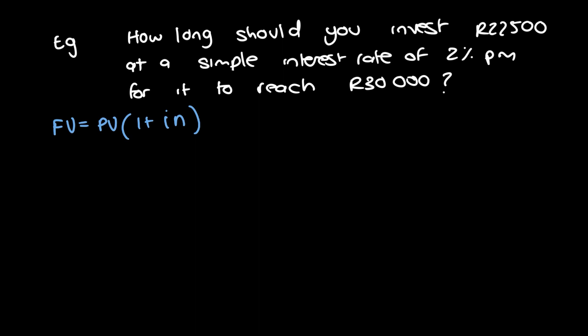So we need to make n the subject of the formula. So we've already done the working out for that just earlier in this video. So we're just going to write it down: FV divided by PV minus 1 divided by i. So that is the formula we're going to be utilizing.